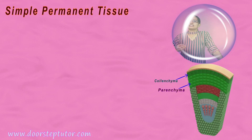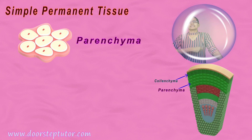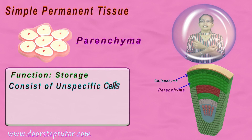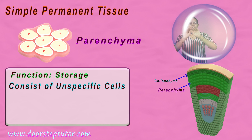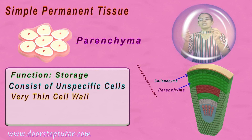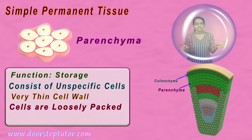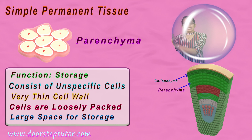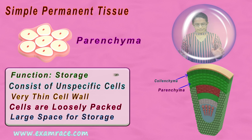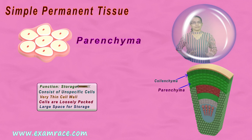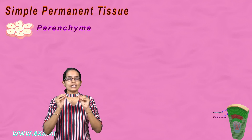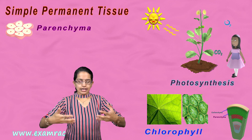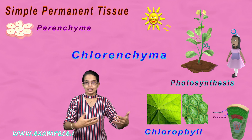Simple permanent tissue — let's first talk about parenchyma. Parenchyma is the most common of those. The most basic function is storage. It consists of unspecialized cells with a very thin cell wall. Most of the cells are loosely packed and have large spaces for storage. This parenchyma is further specialized — if there is a role required to perform photosynthesis, you have chlorophyll that is required, and therefore these are called chlorenchyma.